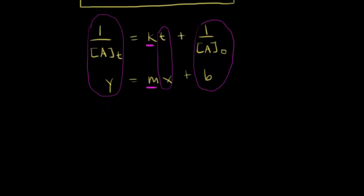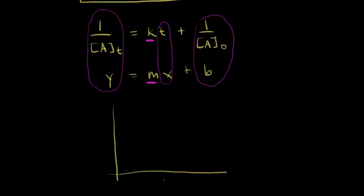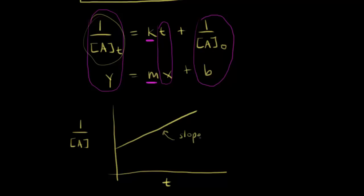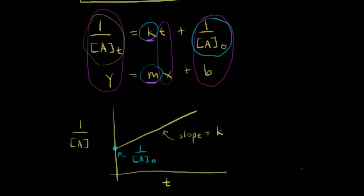So if you're graphing time on your x-axis and one over the concentration of A on your y-axis, you're going to get a straight line. The slope of that straight line is equal to K, the rate constant. And the y-intercept is one over the initial concentration of A. Let's quickly sketch this graph: x-axis is time, y-axis is one over [A]. For a second order reaction the graph is a straight line, with slope equal to K and y-intercept equal to one over the initial concentration of A. That's the idea of the integrated rate law for a second order reaction.